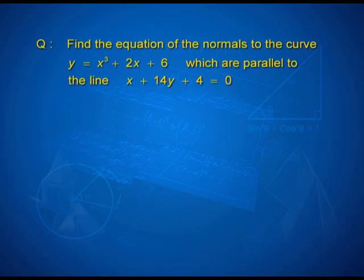We have another problem where the information is indirect. Find the equations of the normals to the curve y = x³ + 2x + 6 which are parallel to the line x + 14y + 4 = 0. What you are given directly or indirectly is that the normal to the curve is parallel to this line. So the slope of the line will be the same as the slope of the normal. You know the slope of the normal — what is the second thing you need? The point of contact. Our main work will be to get that point of contact from the given information.